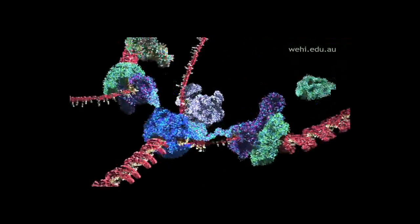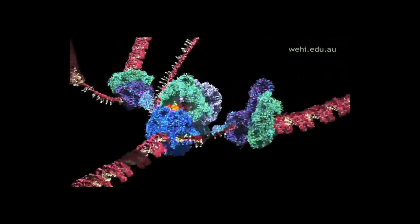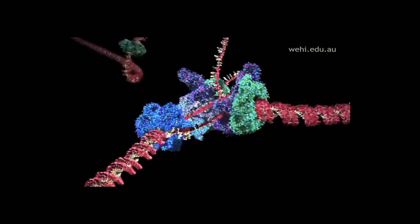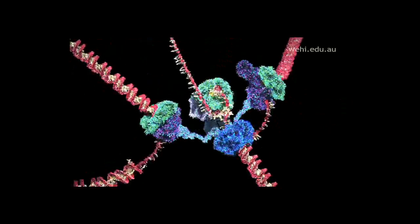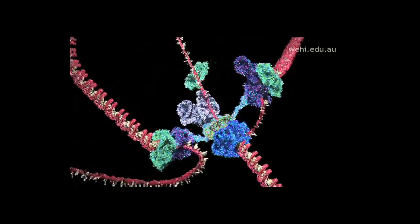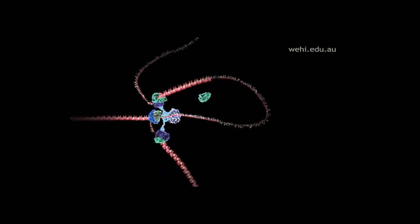One strand is copied continuously and can be seen spooling off to the right. Things are not so simple for the other strand because it must be copied backwards. It is drawn out repeatedly in loops and copied one section at a time. The end result is two new DNA molecules.